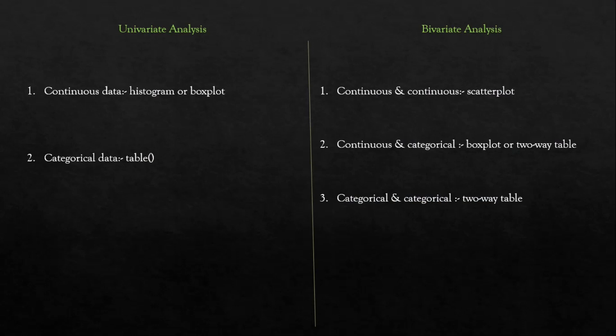In univariate analysis, if the data is continuous you can understand it by plotting a histogram or boxplot. If the data is categorical, you can use the table function in R. For bivariate analysis, continuous vs continuous data can be understood with a scatter plot, continuous vs categorical with a boxplot, and categorical vs categorical with a two-way table.